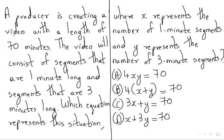Hello everyone, my name is Naushar and today we are going to solve this question. A producer is creating a video with a length of 70 minutes. The video will consist of segments that are one minute long and segments that are three minutes long. Which equation represents this situation, where x represents the number of one-minute segments and y represents the number of three-minute segments?